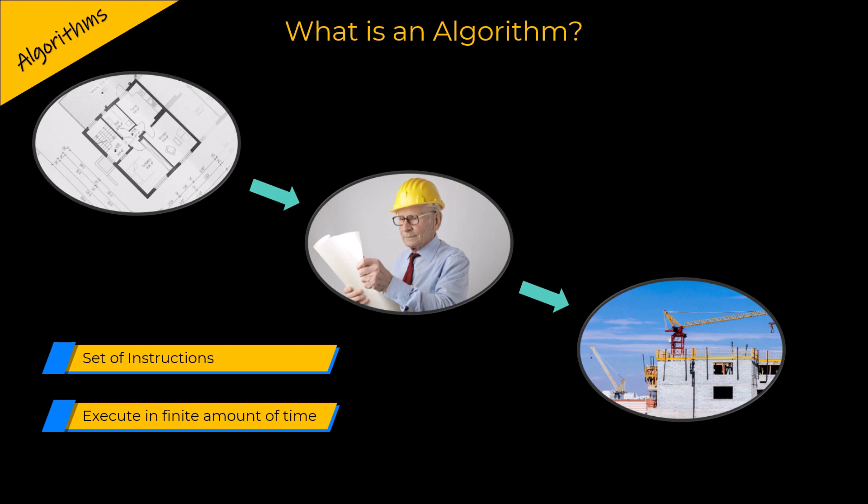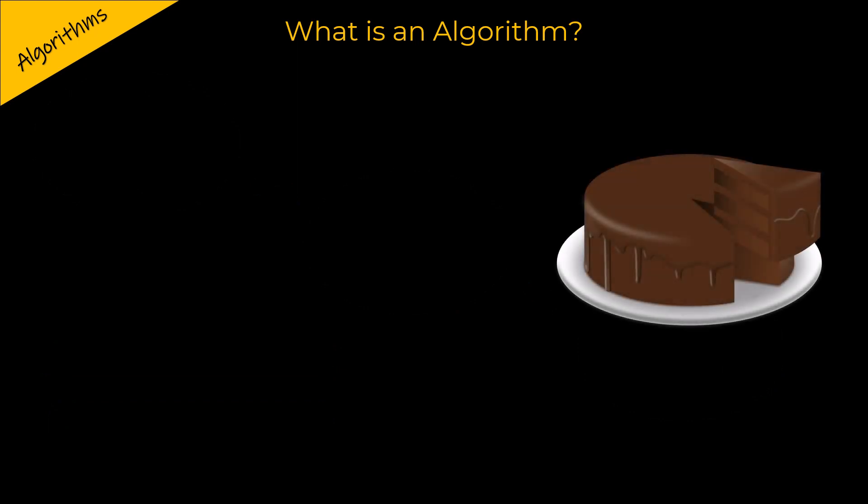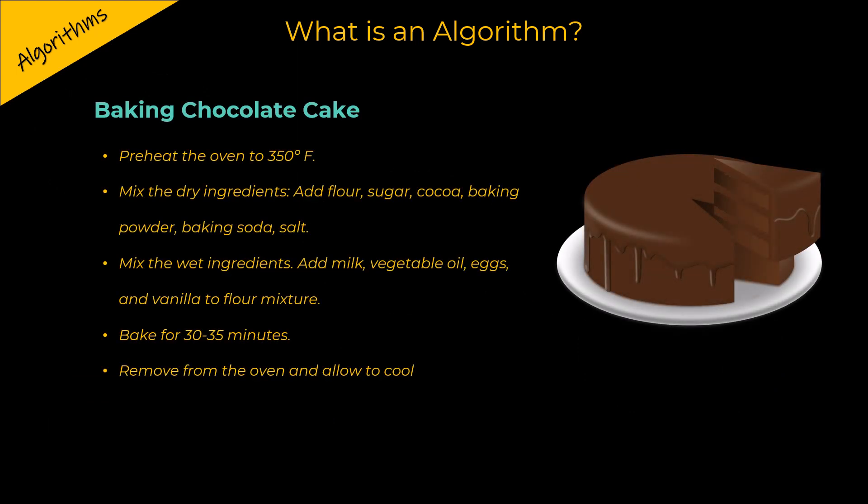Algorithms are not only used in computer science, we can use algorithms in everyday life, even though we do not use the term algorithm. For example, in cooking, we follow a set of instructions. Such as in case of baking a chocolate cake, we follow the instructions in the recipe.